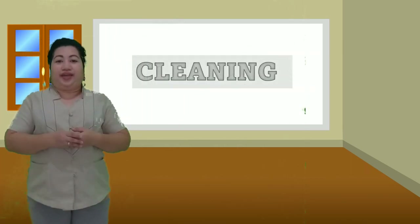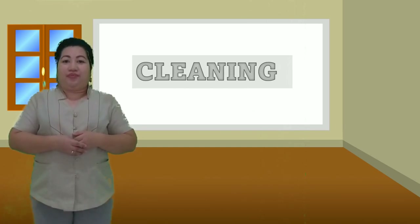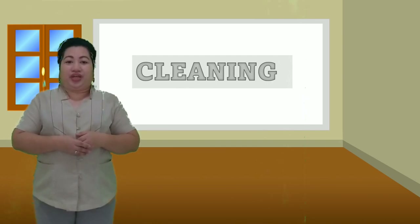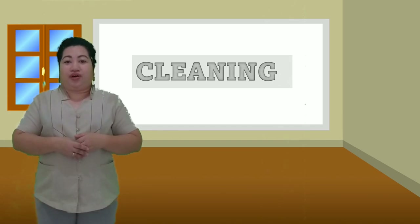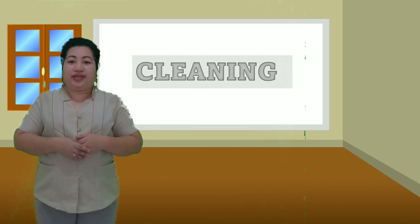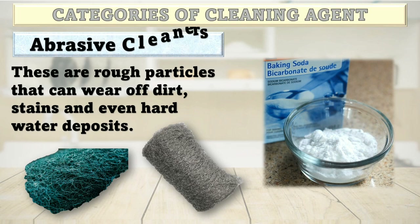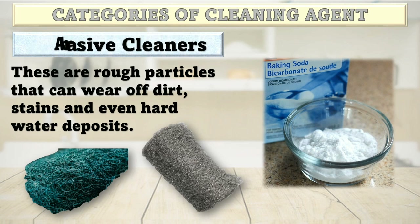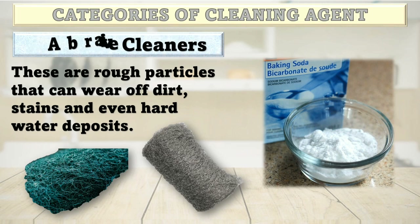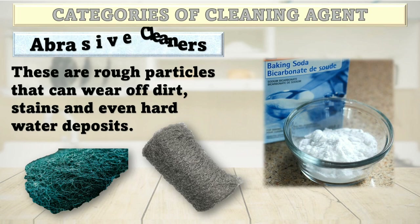Cleaning is the act of removing any unwanted substances or the process of making any surface free from contamination by bacteria. The kitchen should be given particular attention on cleanliness and safety to avoid food contact surfaces becoming the source of foodborne illnesses. To avoid this, thorough cleaning can be done using a cleaning agent. Abrasive cleaners are rough particles that can wear off dirt, stains, and even hard water deposits. Their cleaning and polishing action is provided by ingredients like pumice, and they are available in both powder and liquid form. Scrubbing pads and steel wool are examples of abrasive tools. Baking soda is a good example of a non-abrasive material with cleaning properties.